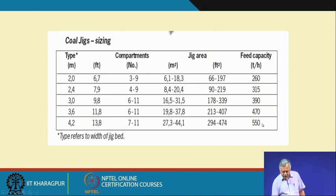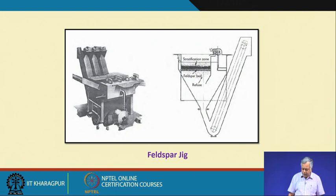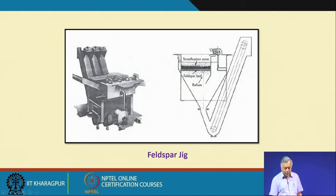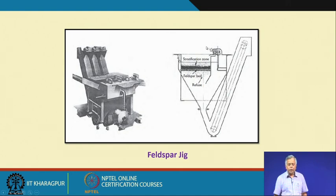These are very high-capacity jigs. This photograph — taken from open source — shows how a Feldspar jig looks. It uses ragging material; there is a sink material coming through, and a bucket elevator transfers material to a separate launder. The overflow is collected through the overflow weir, which is the discharge mechanism.